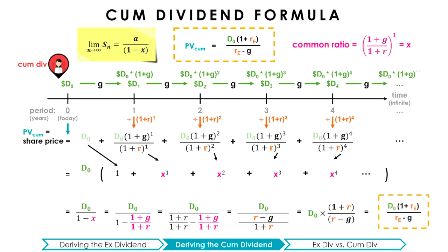We have finally reached the cum-dividend formula. The price of a stock — the present value of infinitely many future dividends — equals D0, today's dividend, multiplied by (1+RE), all divided by (RE minus G), the constant growth rate. Just like the ex-dividend formula, the sum of the infinite series of dividends can only be finite if the dividends grow at a slower rate than they are discounted. In other words, RE must be greater than G; otherwise the stock price would equal infinity.